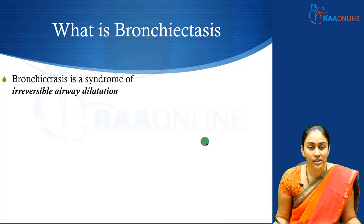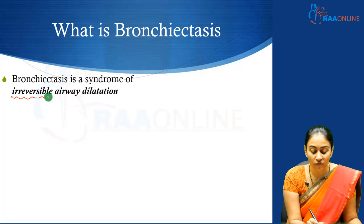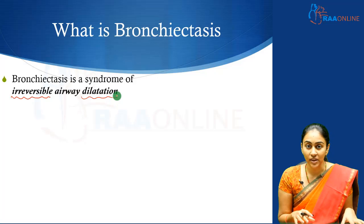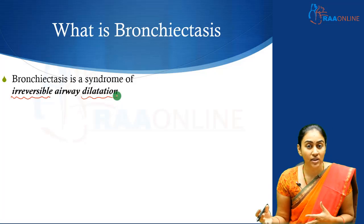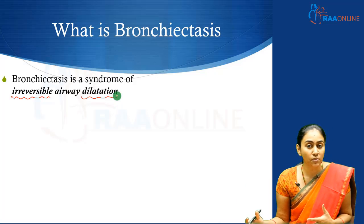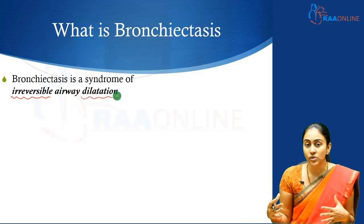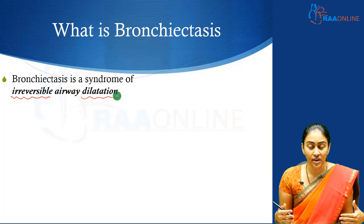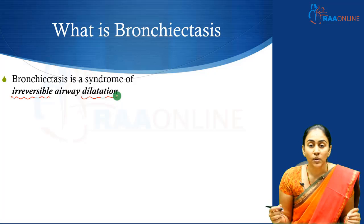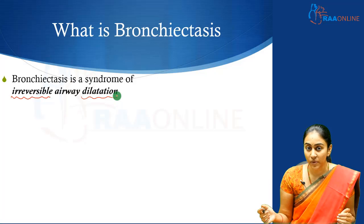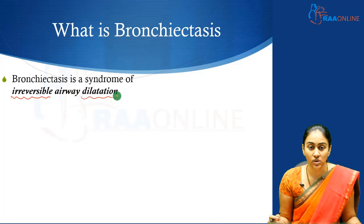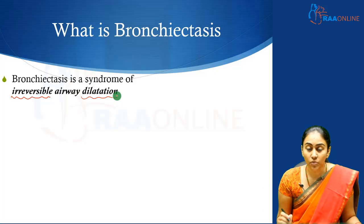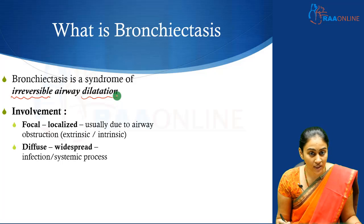Now what is bronchiectasis? Bronchiectasis is a syndrome of irreversible airway dilatation. It is similar to COPD in that this is also going to be irreversible, unlike asthma where there is going to be a reversible process. But this is different to asthma and COPD in that here it is characterized by an irreversible airway dilatation, whereas in asthma and COPD there is going to be airway obstruction, which is reversible in asthma and irreversible in COPD.